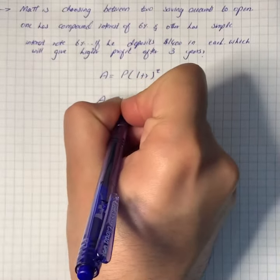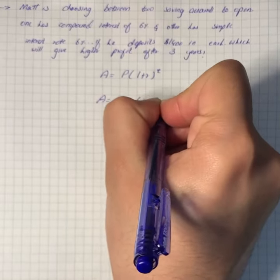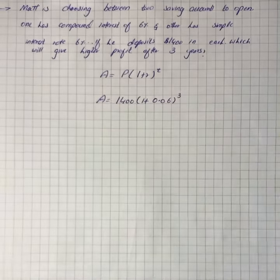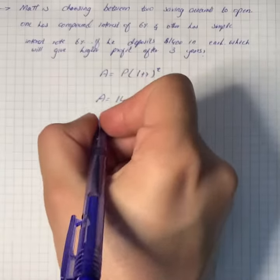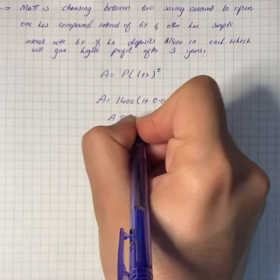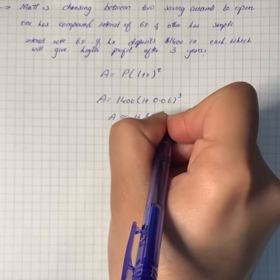We have total deposit $1400, one plus r, 6% which is 0.06, raised to power 3, that is the number of years. So A is approximately $1667.42.